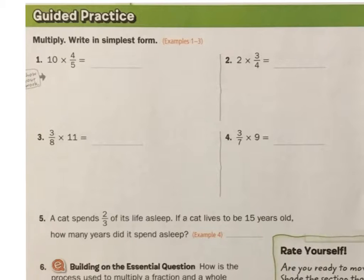On this first one, I have 10 times 4 fifths. 10 divided by 1 is 10, so 10 over 1 is the same as just 10 times 4 over 5. And now I just go across. 10 times 4 is 40. 1 times 5 is 5. Then I simplify it. How many 5s go into 40? 8. There you go. So my answer is 8.